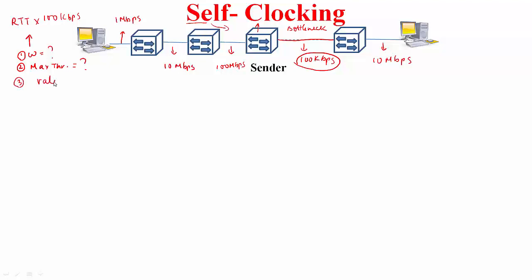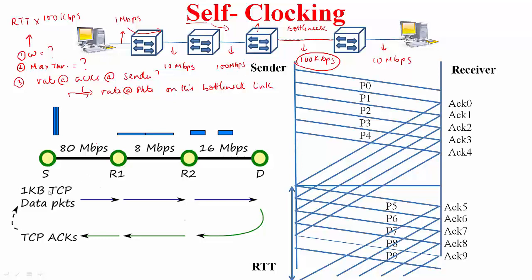Does self-clocking still work in the multi-hop context? The rate at which ACKs arrive at the sender is dictated by the rate at which packets are sent on the bottleneck link. Consider sending 1-kilobyte TCP packets between a source and destination separated by a high-bandwidth link, a low-bandwidth link, and an intermediate-bandwidth link. The transmission time of the 1KB packet varies: small on the high-bandwidth link, large on the low-bandwidth link, and in between on the intermediate link.